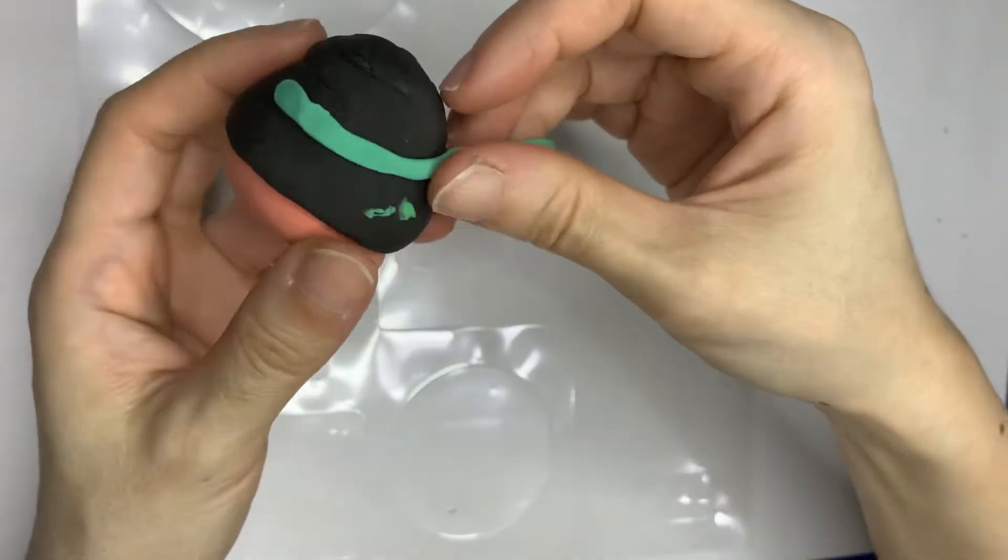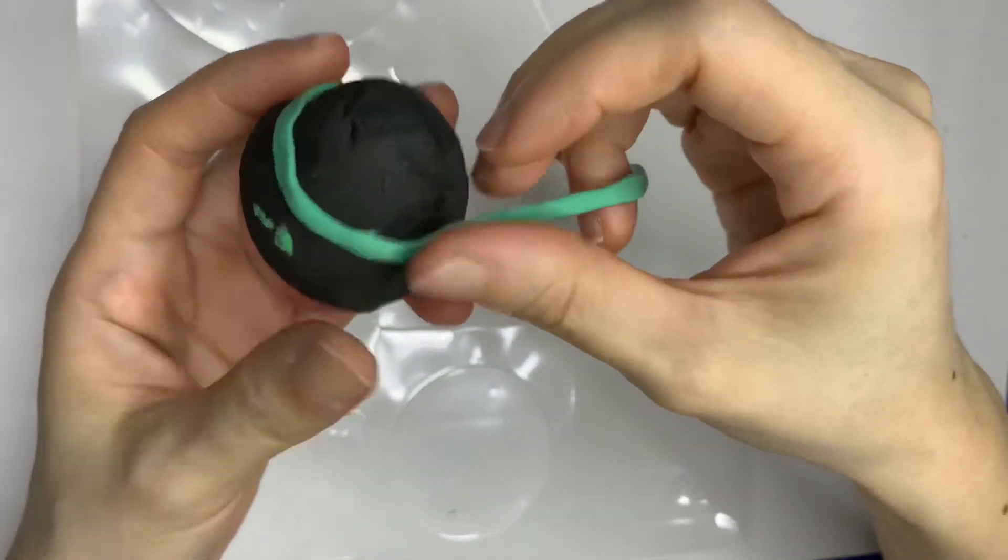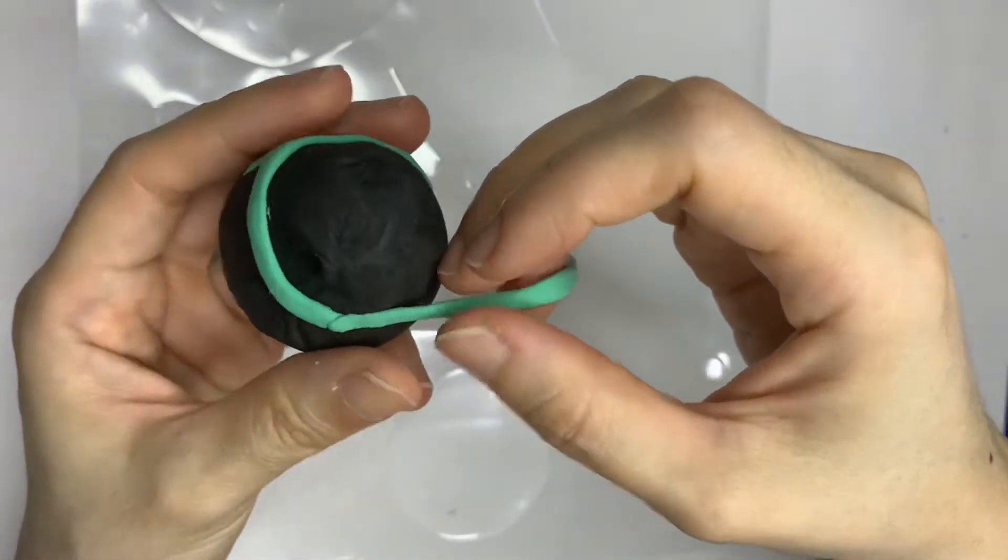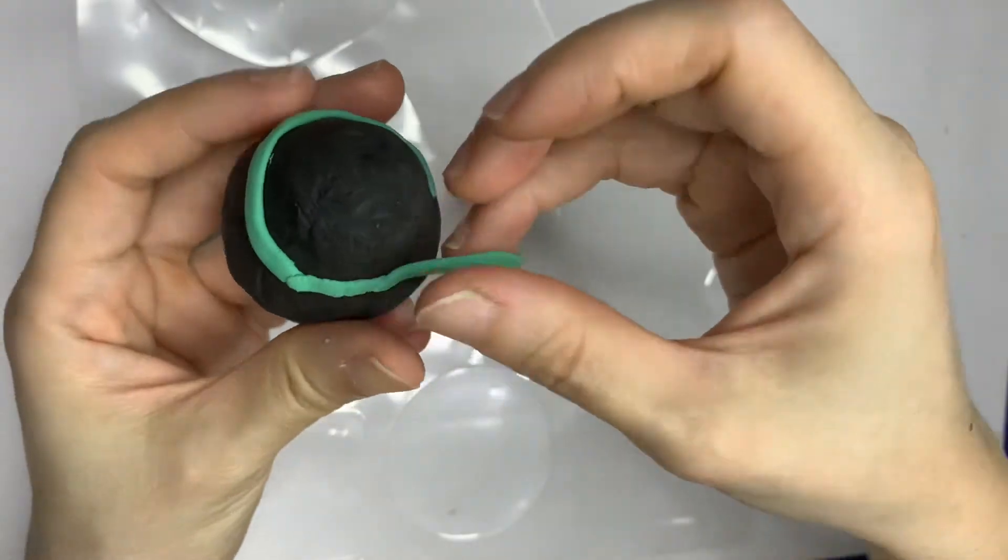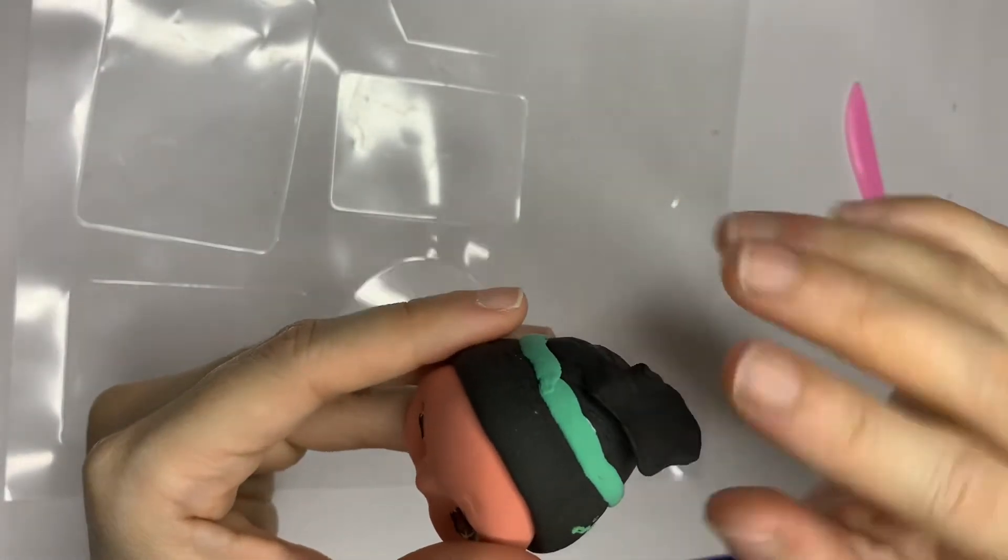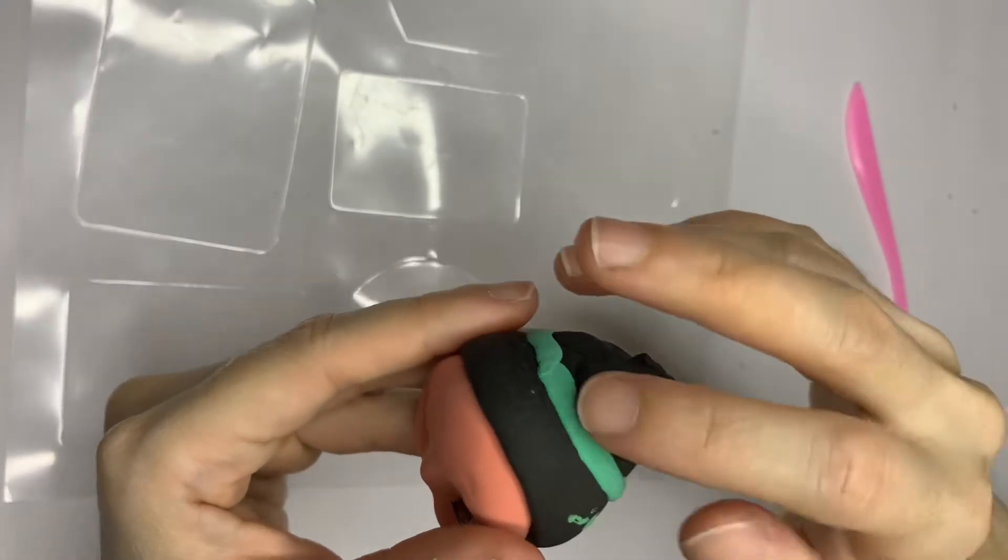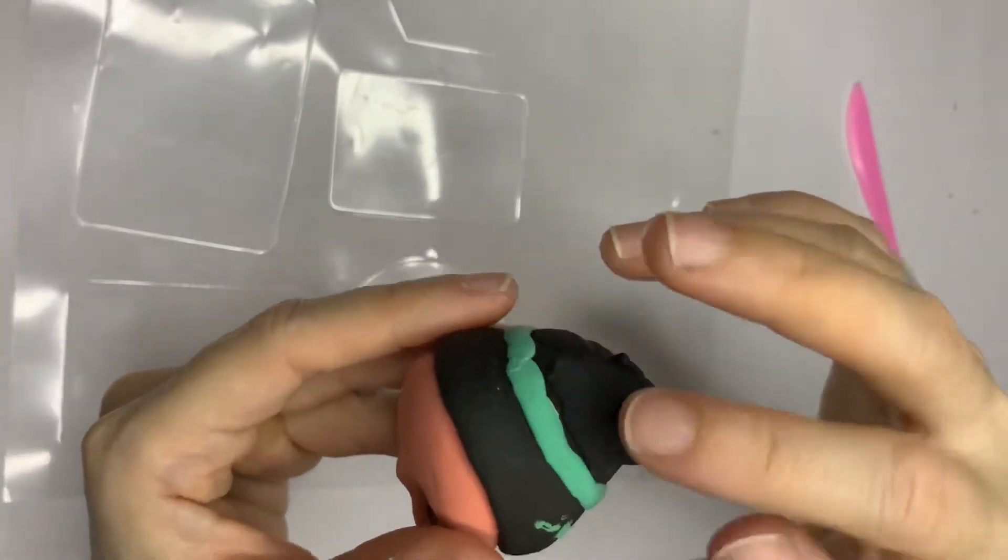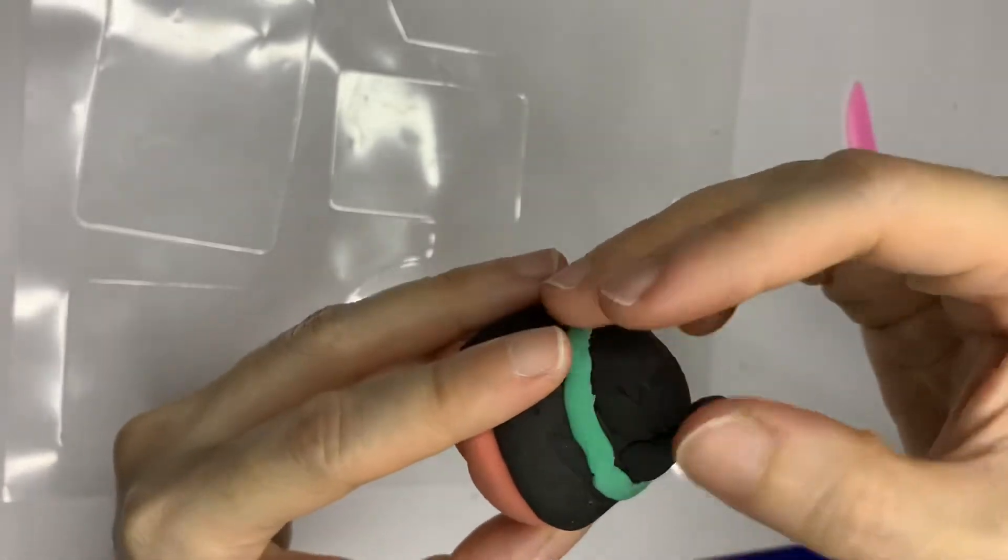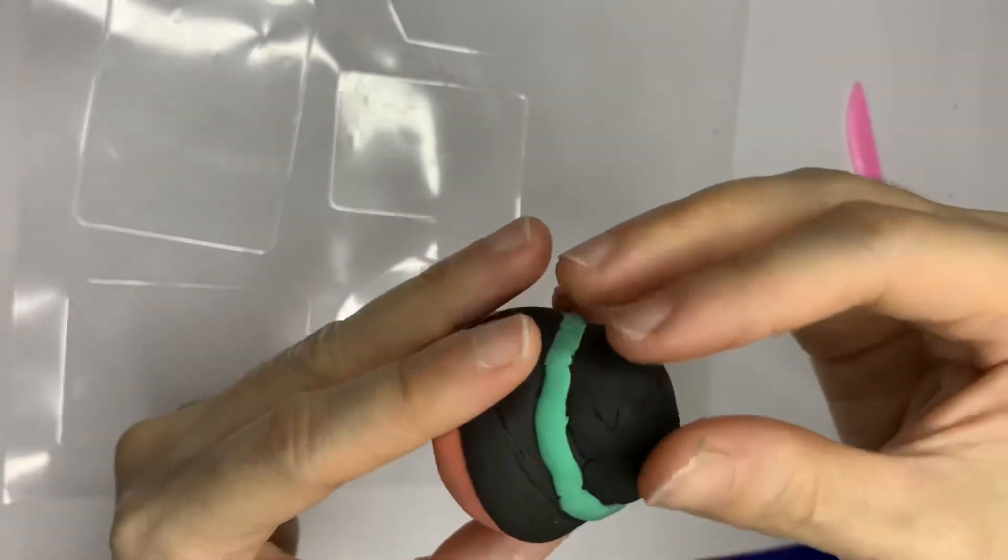Make a thin green stripe and wrap it over the bun. Add on more hair to the bun until it's big enough.